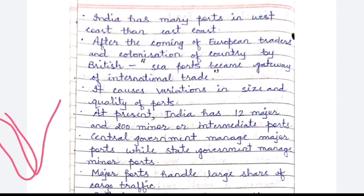States like Karnataka, Kerala, and Gujarat are on the West Coast, where India has more ports. However, among the 12 major ports of India, both coasts have 6 each — 6 on the West Coast and 6 on the East Coast. After the coming of European traders and colonization by the British, seaports became gateways of international trade — this statement can be asked as a question from this chapter.